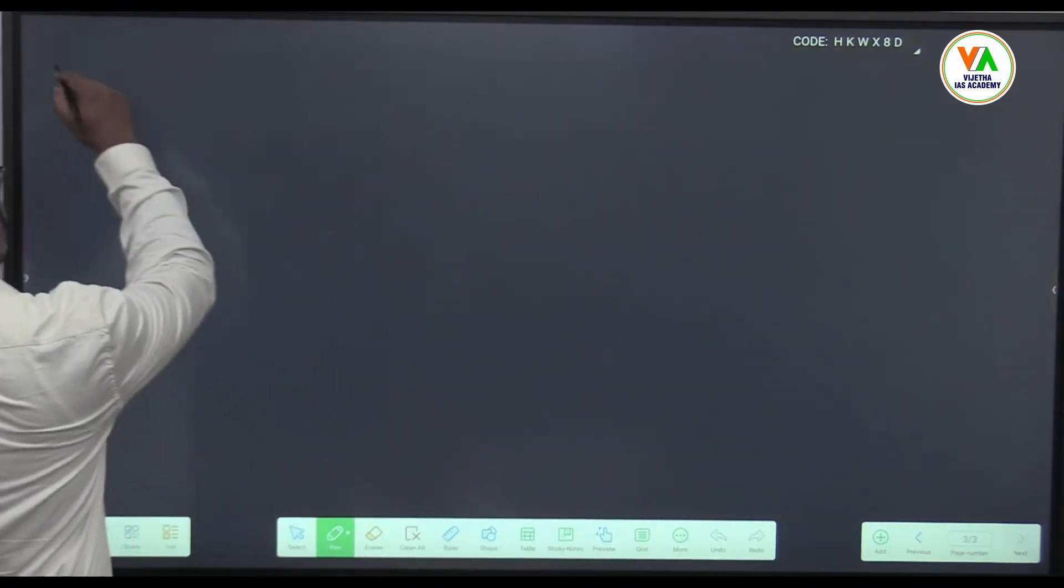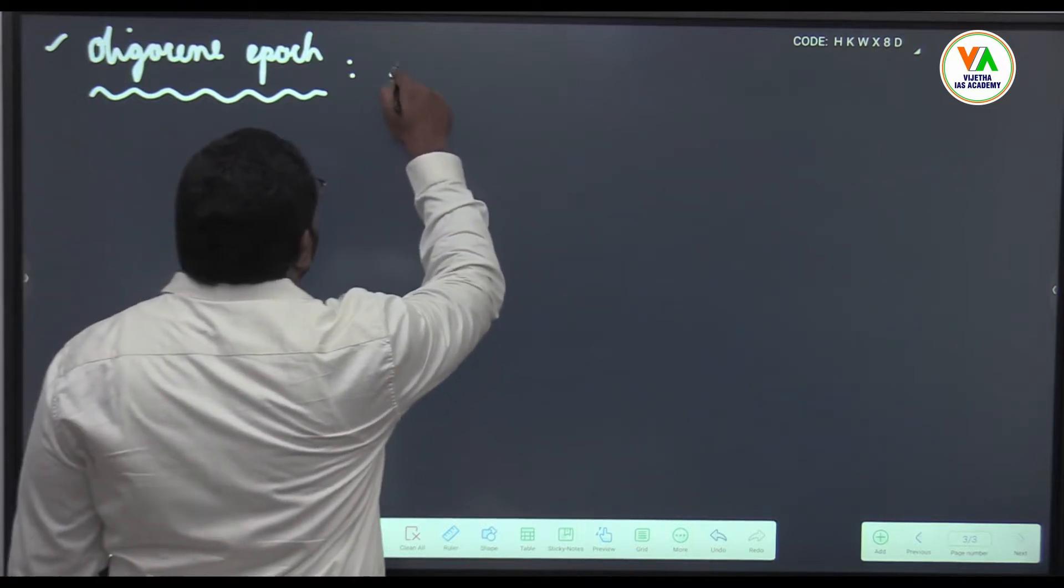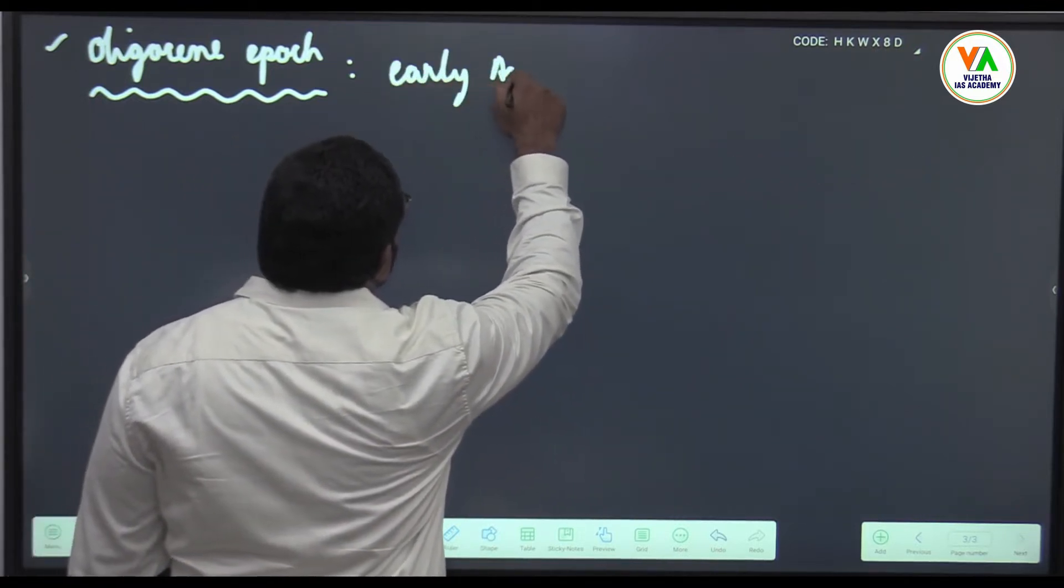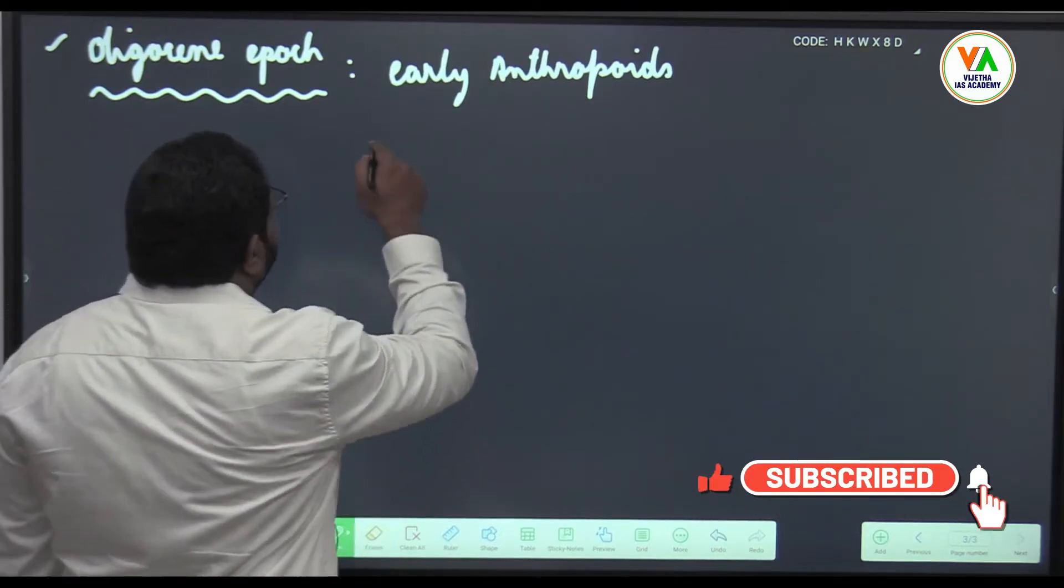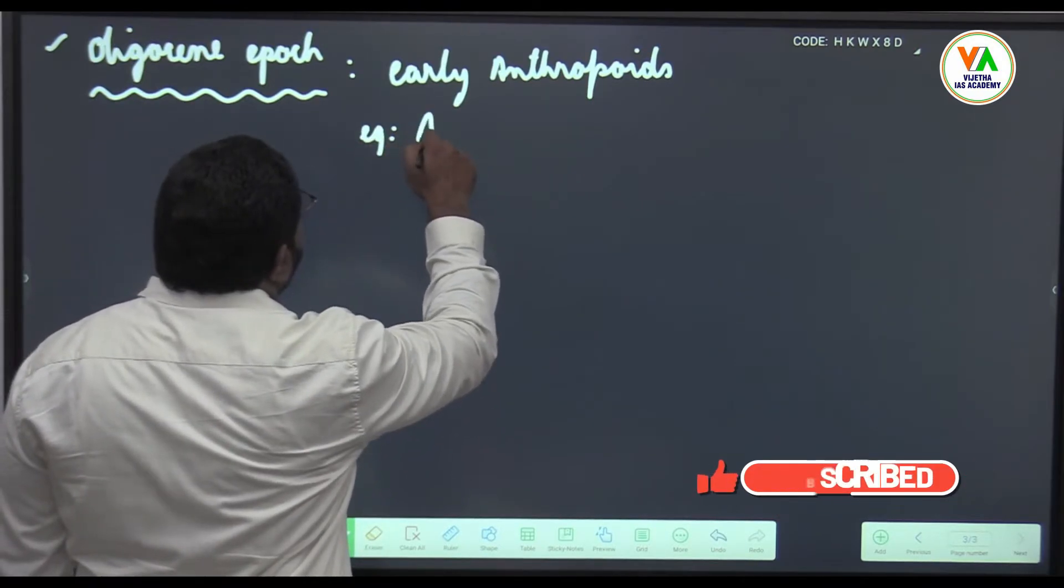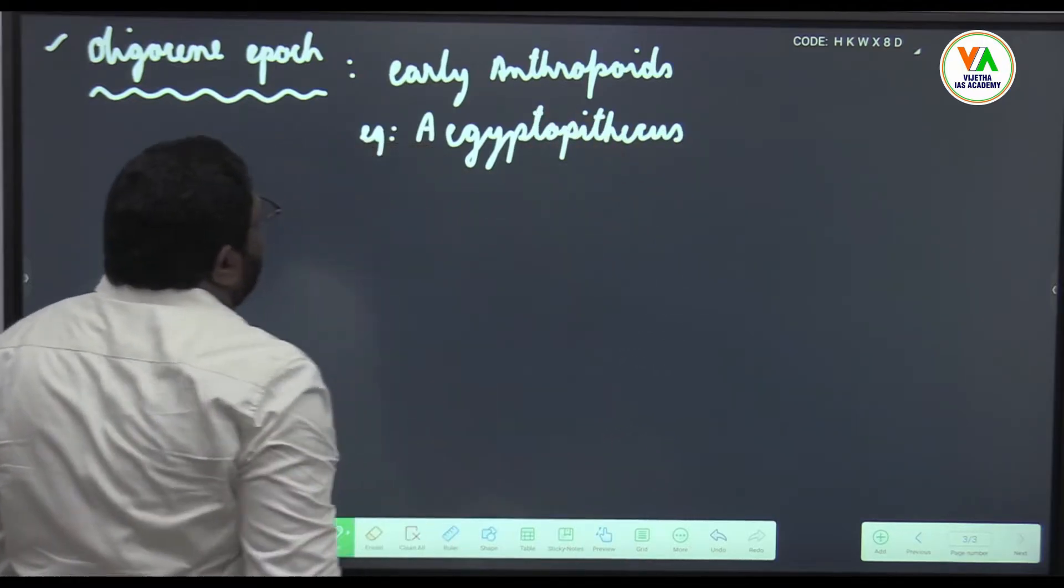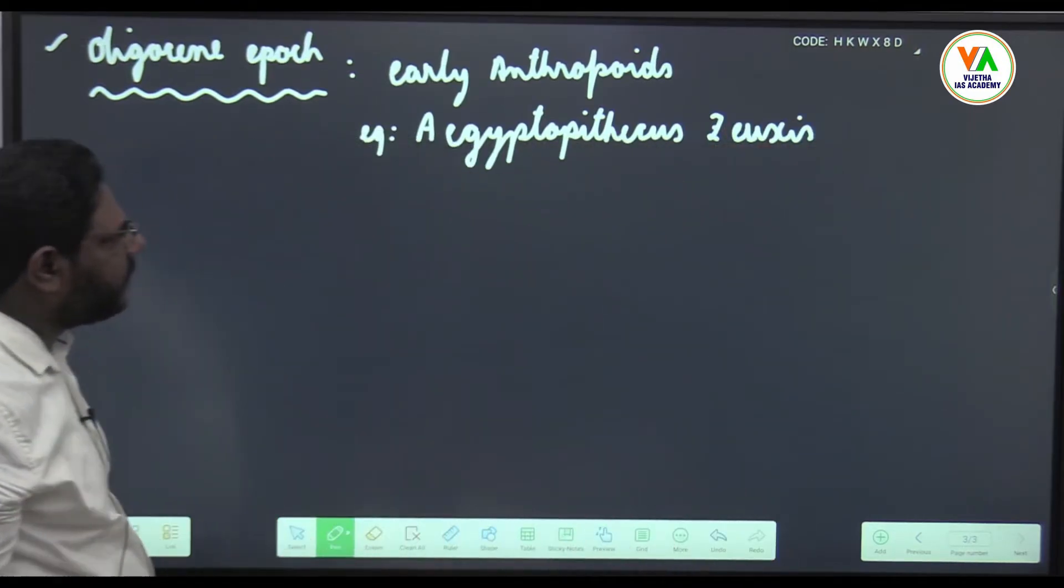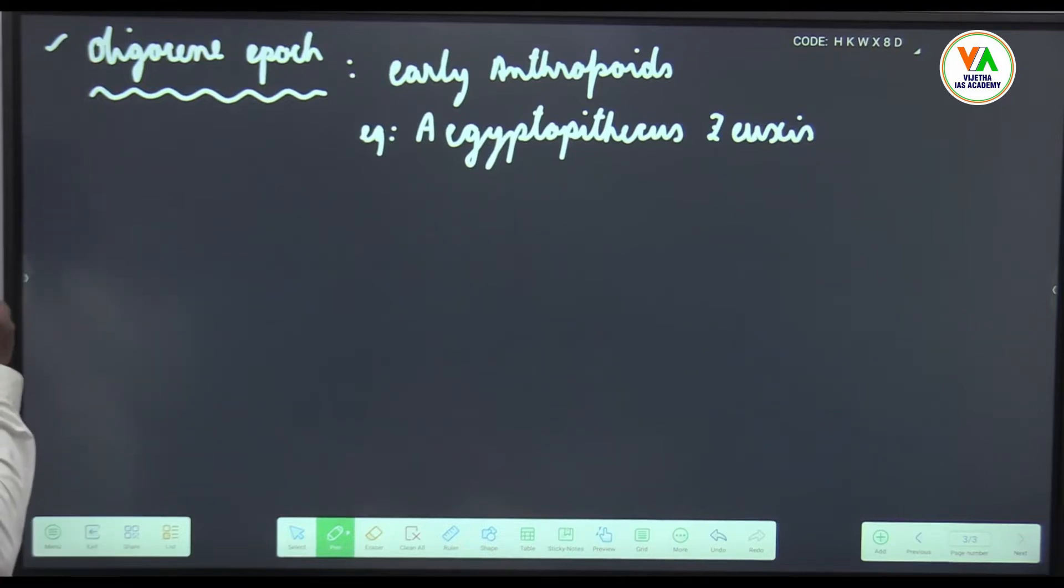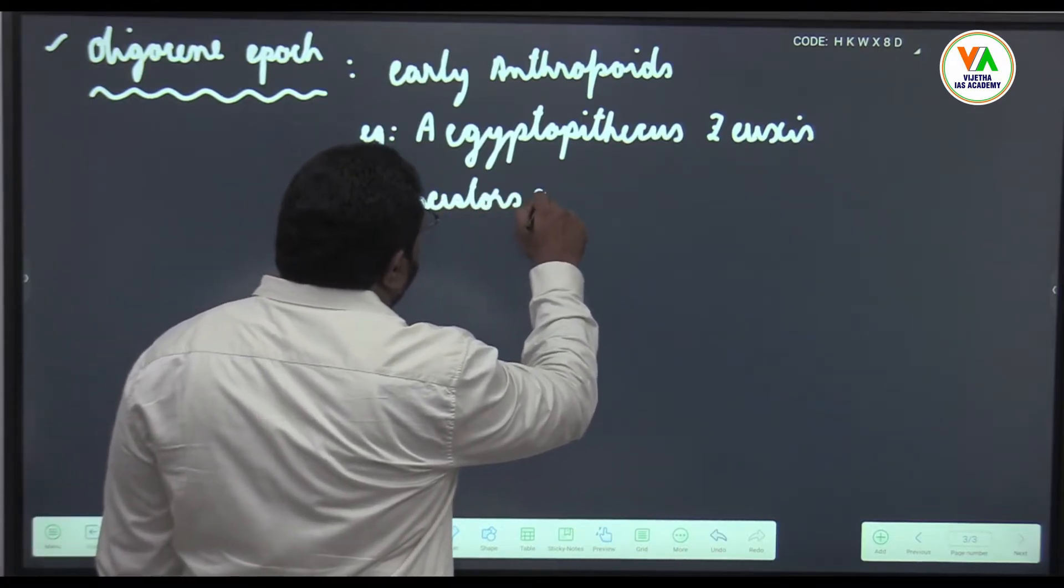In Oligocene Eocene epoch, early anthropoids came into existence. An example here is Aegyptopithecus zeuxis. These are considered to be ancestors of old world monkeys.